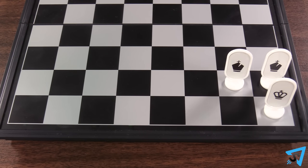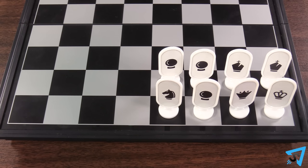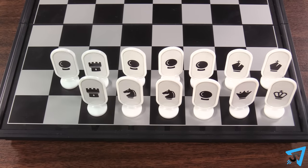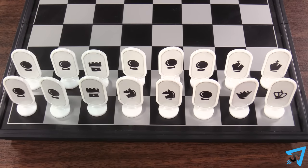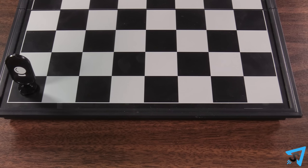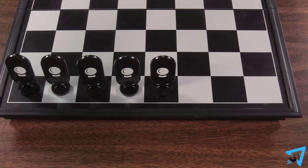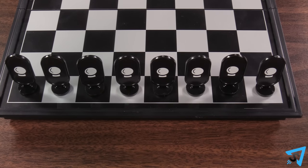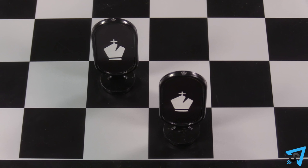During setup, each player places their pieces however they want on their closest two rows, with their pieces' identities facing them, hidden from their opponent. There is no restriction to where pieces can be placed. Pawns are allowed to be placed on the first row and bishops can be placed on the same color.